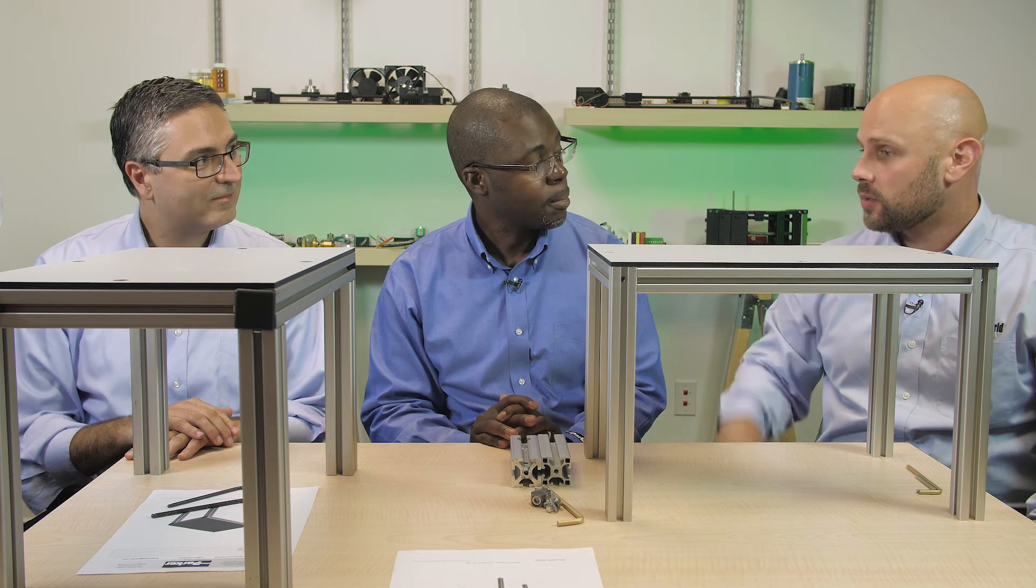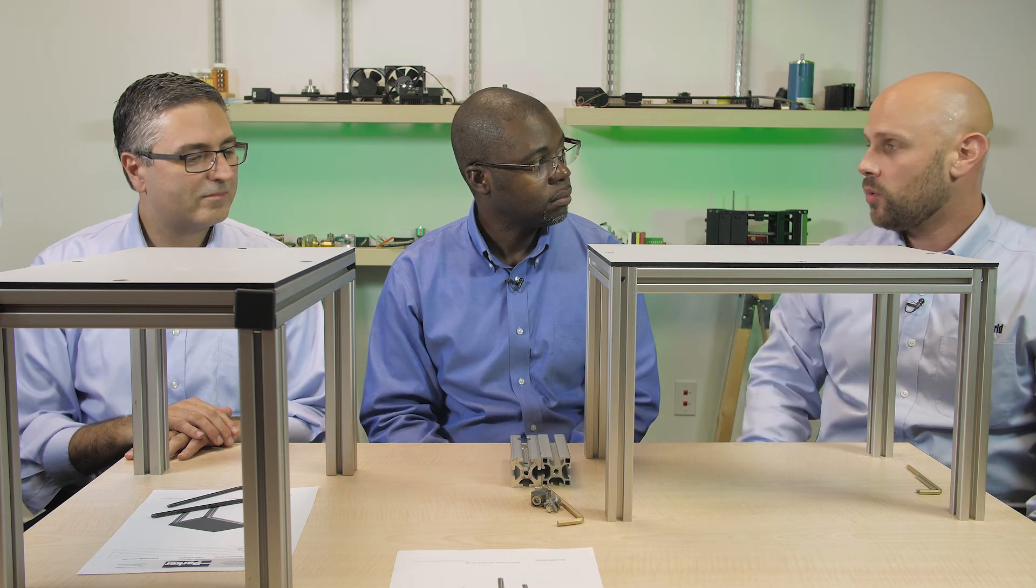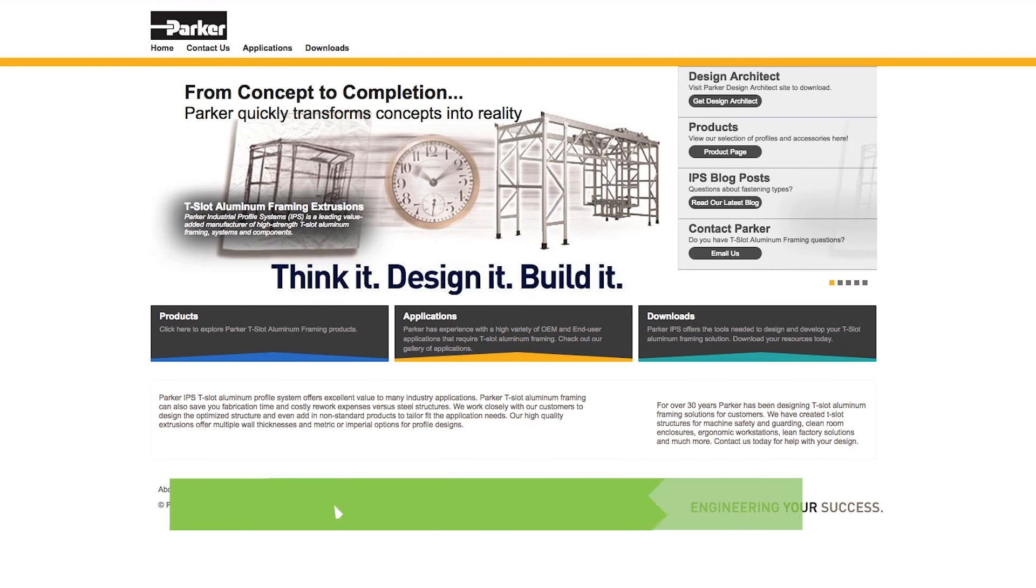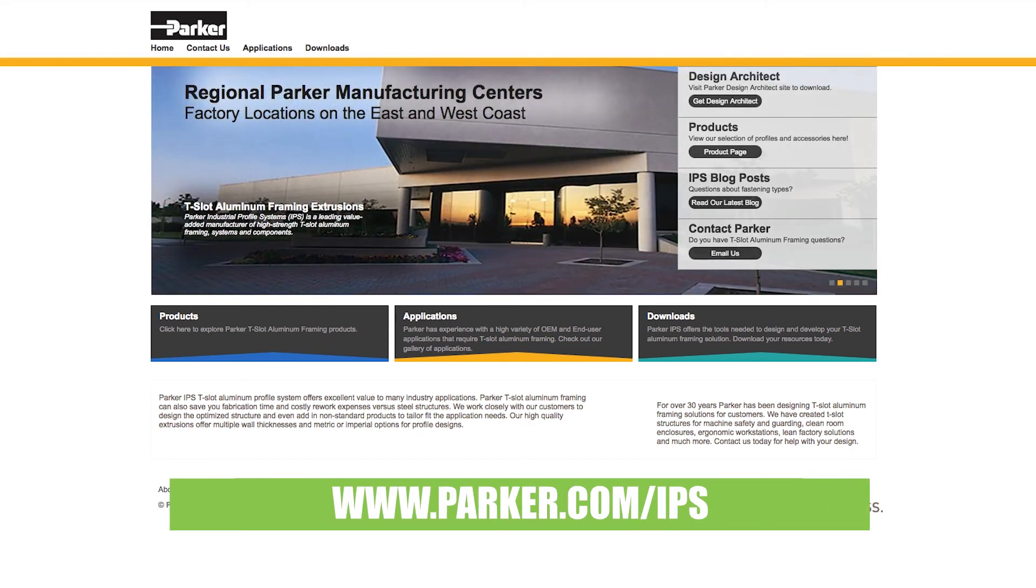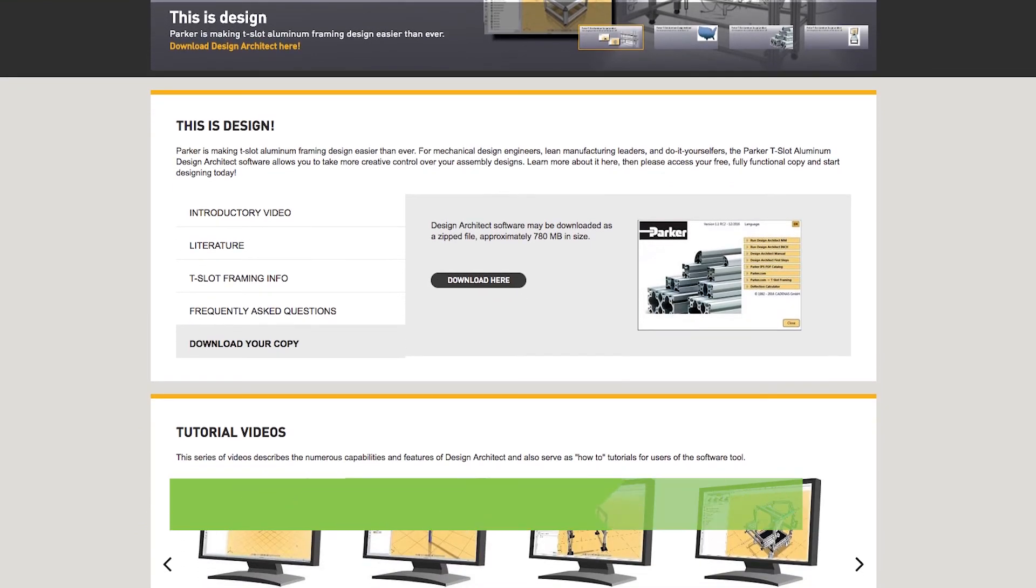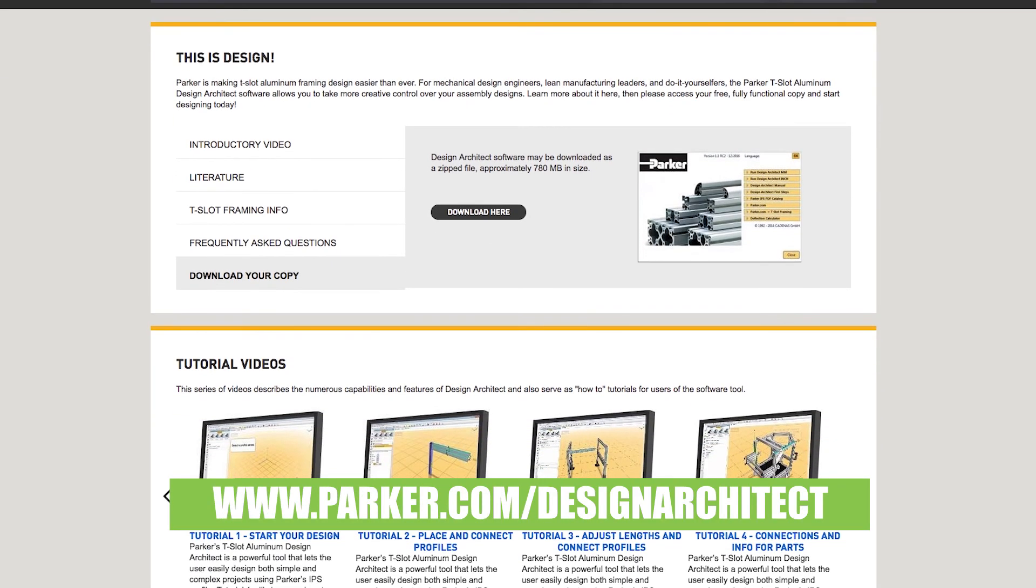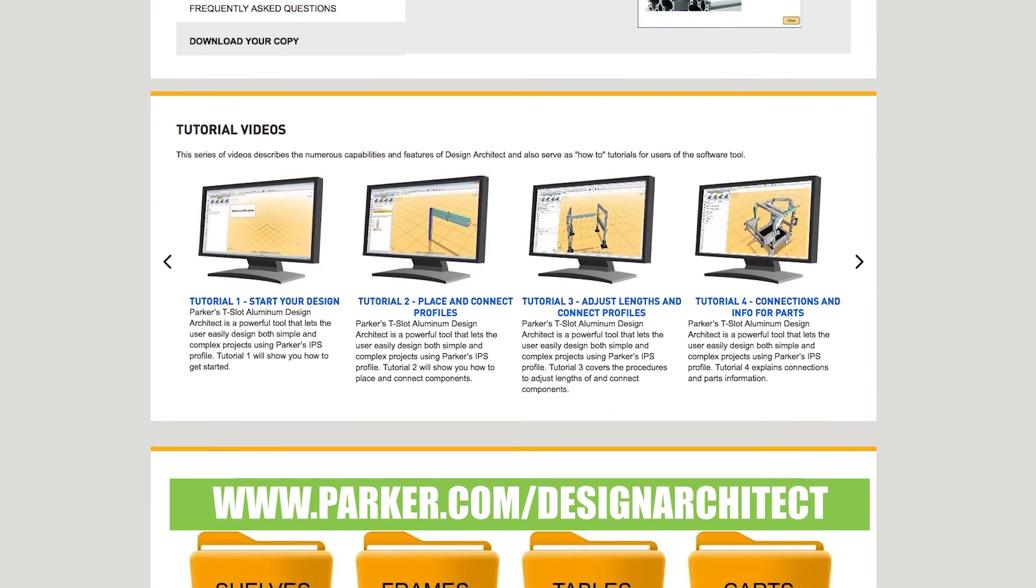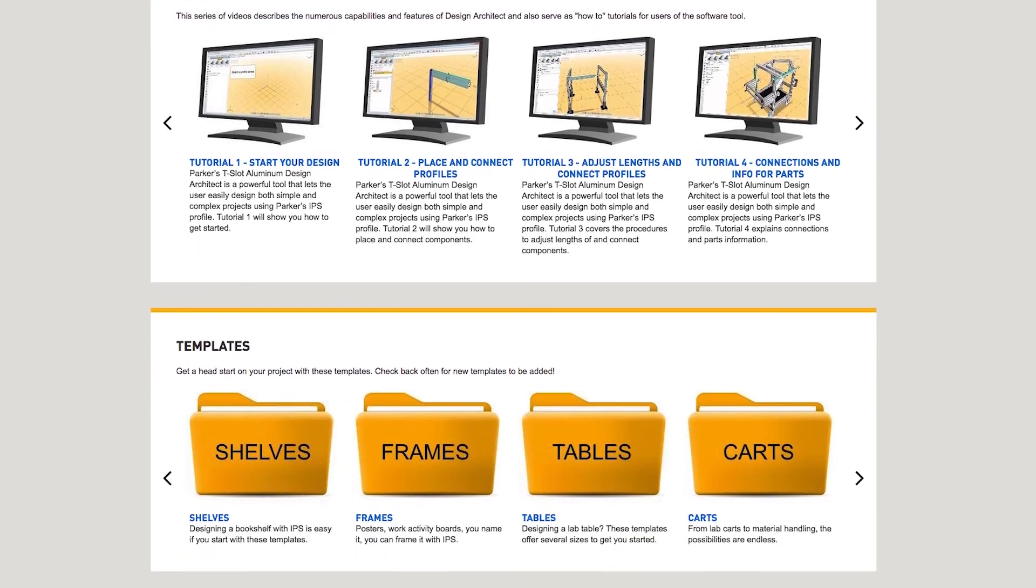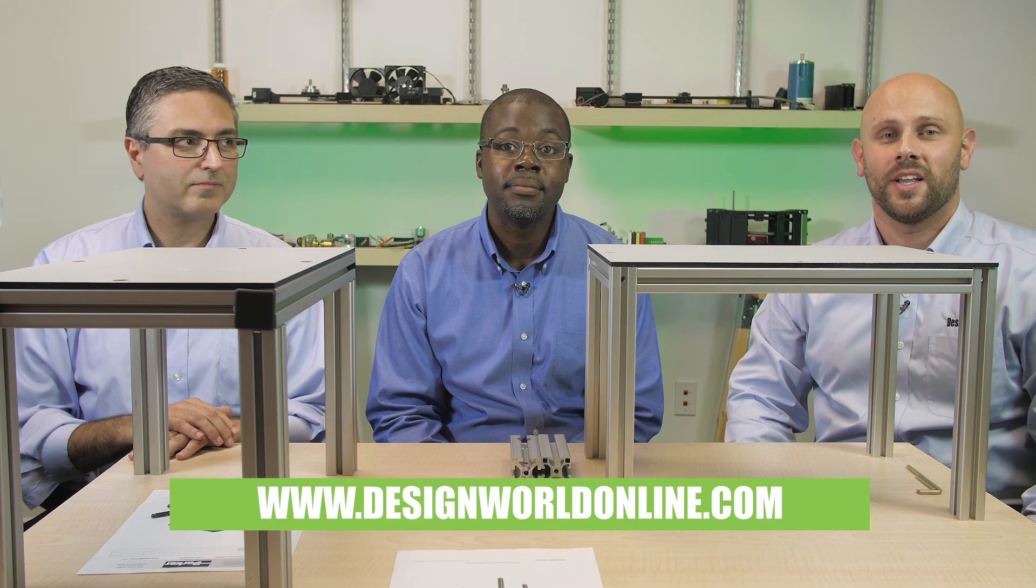I guess, lastly, Mario, can you tell people about where they can find more about the T-slot product from Parker? Sure. So you can go to parker.com/IPS for all things with the Parker T-slot aluminum framing product. And also for the design architect, you can go to parker.com/designarchitect. All one word. And of course, for more videos like this from Design World, you can go to designworldonline.com.